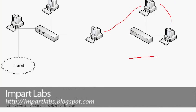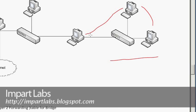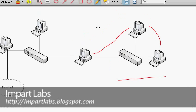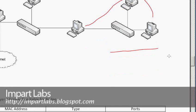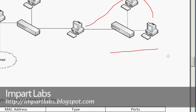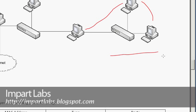The bridge knows that traffic belongs to this side of the network, so it will not simply send it over the bridge — it will filter and discard it. All the network traffic from this network would just remain inside the network itself.